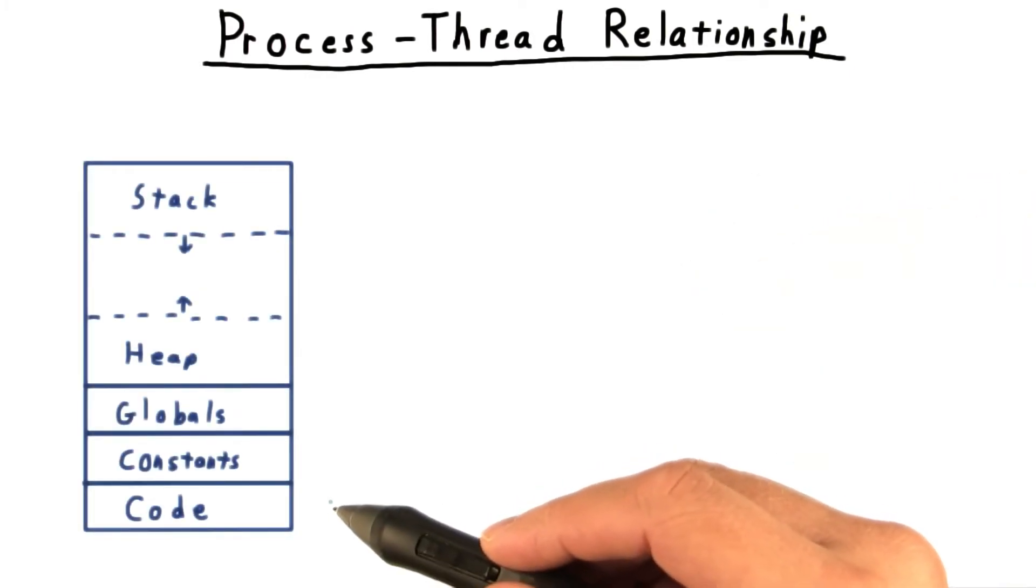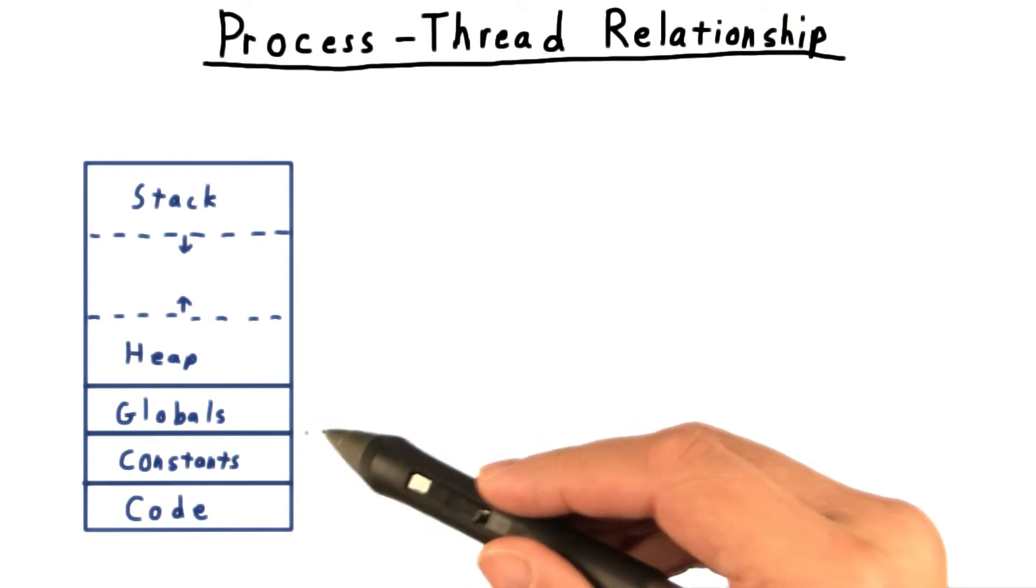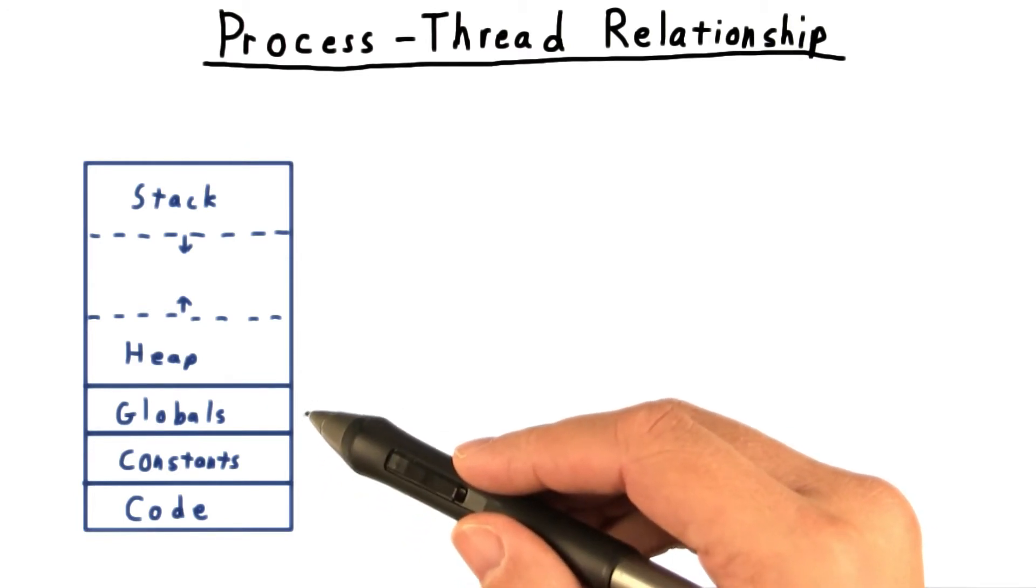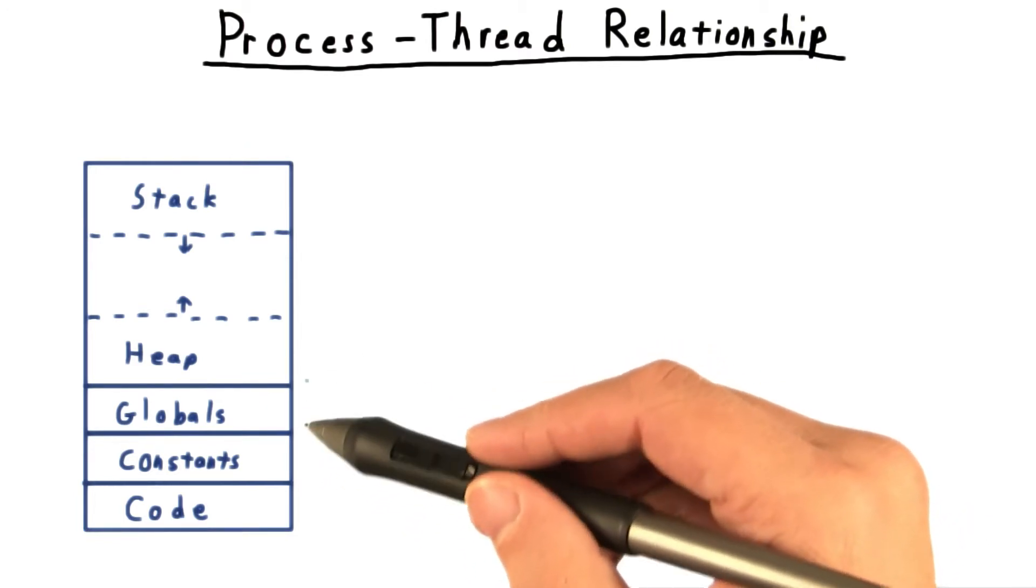Typically, at the lower addresses, a process will have the instructions, followed by literals, that is, values in the code, then statically allocated memory, really the global variables.